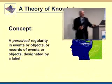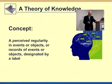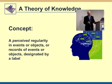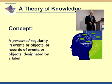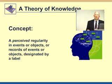We define concept as a perceived regularity or pattern in events or objects, or records of events or objects, designated by some label. Words are usually the labels we use for concepts, but it could be symbols too, like plus and minus and sigma.